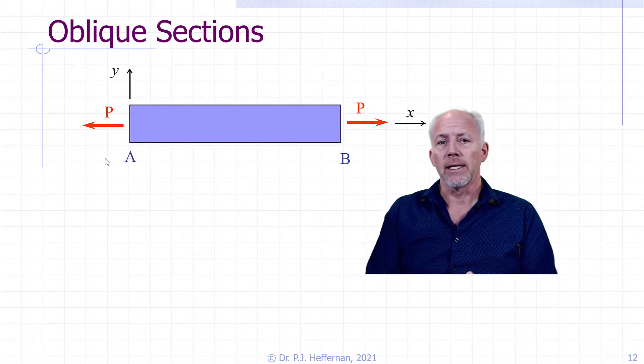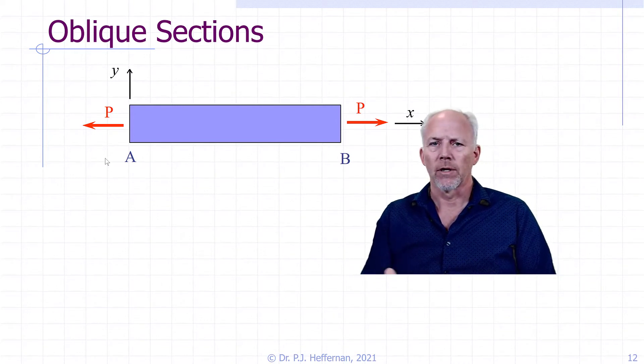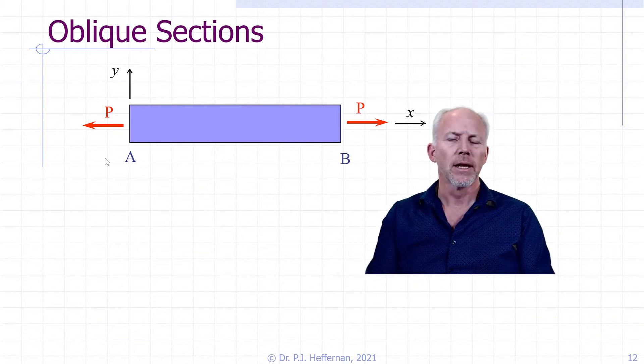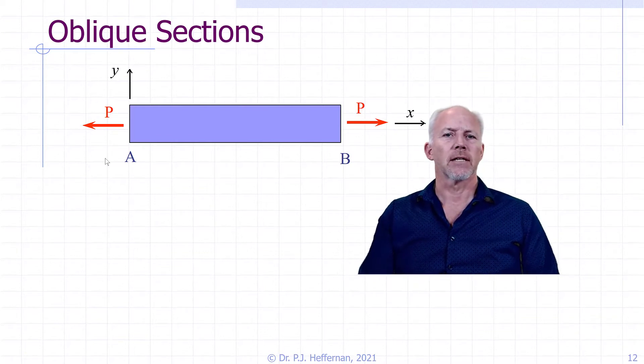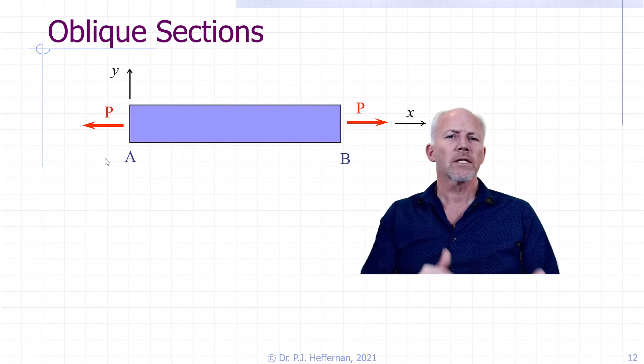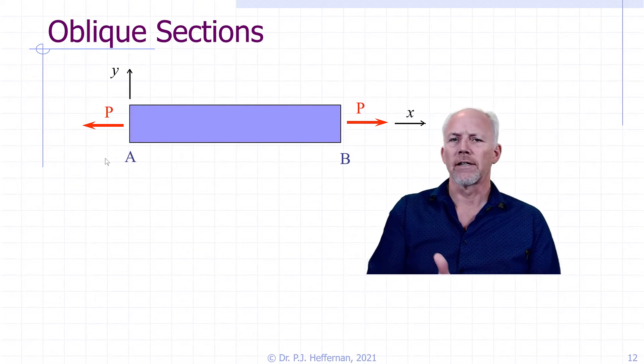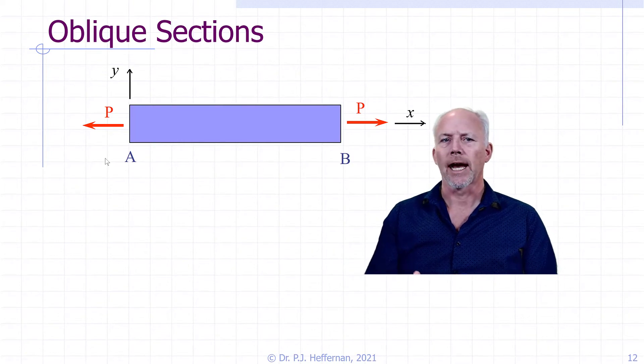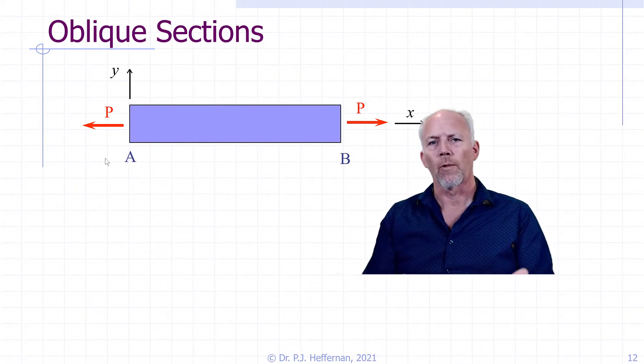We could have chosen that to be off angle or 90 degrees or 30 degrees in a different direction. And so it behooves us to have a look and see what's going on at an angle different from the orientation that we are naturally looking at, the direct x or y direction.